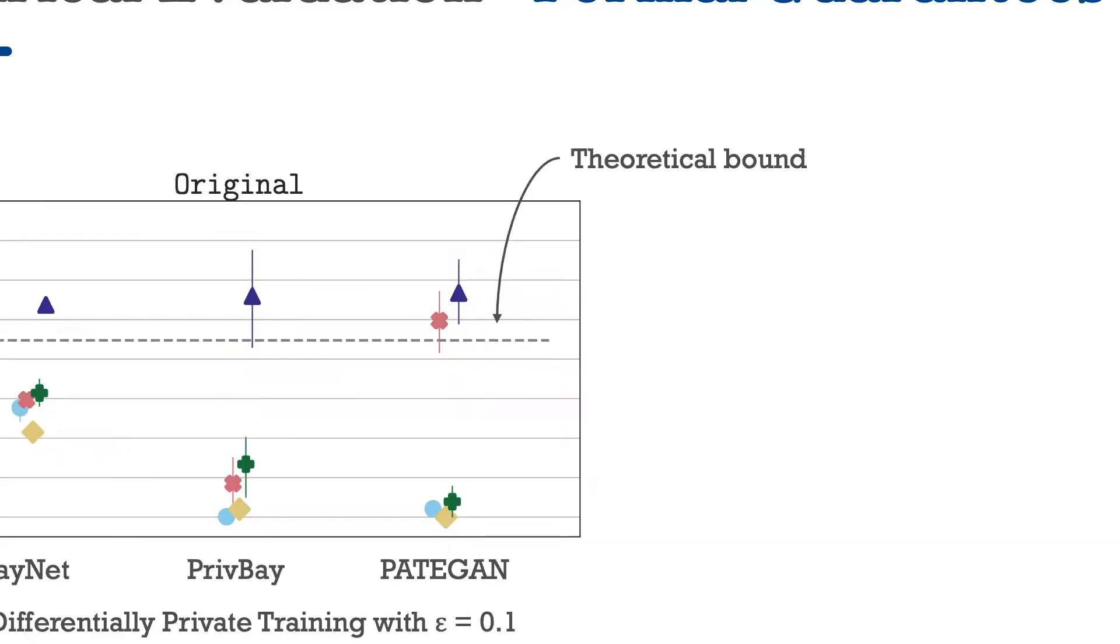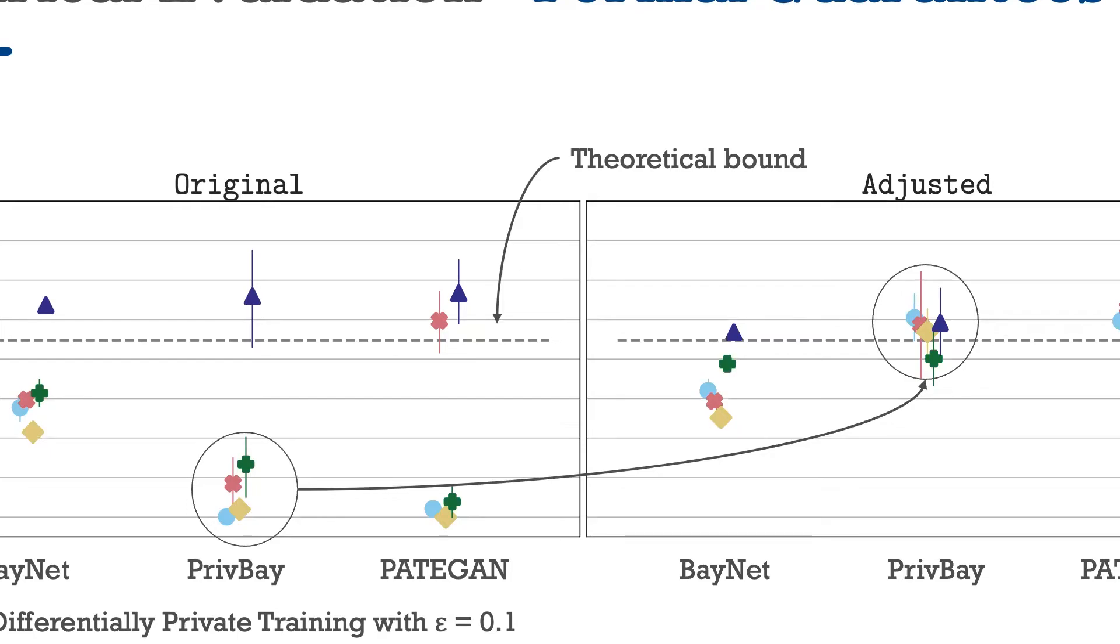As a small interesting side note, the second big benefit of an empirical privacy evaluation framework is that it enables us to empirically assess whether certain synthetic data generation mechanisms fulfill their formal privacy guarantees. What we show here is the initial evaluation results for two very popular differentially private generative models, PrivBay and Patagon. Thanks to the DP guarantees, we can calculate a theoretical lower bound on the expected privacy gain and check whether this bound is met. What we found for a number of implementations is that they actually violate their formal privacy guarantees. So we first had to fix these formal violations in the implementations before we got the expected results and promised privacy gain.